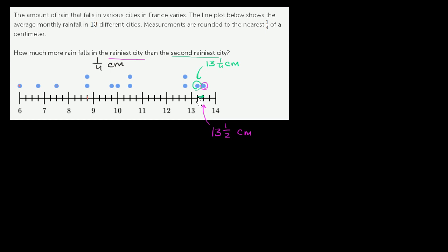Now, if it wasn't so clear, because here we're just looking one notch right over here, you could take the larger of the two and subtract from that the smaller of the two. So you could take 13 and 1/2, and from that, subtract 13 and 1/4.